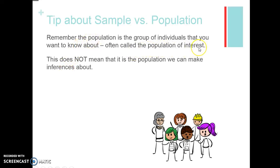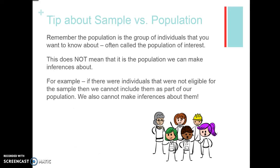Just because we gather a sample doesn't mean we can come to conclusions about our full population of interest. When we take a sample, we want to make sure every individual in our population is eligible to be chosen. If there are individuals not eligible for our sample, we cannot include them as part of our population or make inferences about them. For example, if we're doing a phone survey and the population of interest is everybody in McLean, individuals who don't have a telephone or landline are not eligible, so we cannot make inferences about them.